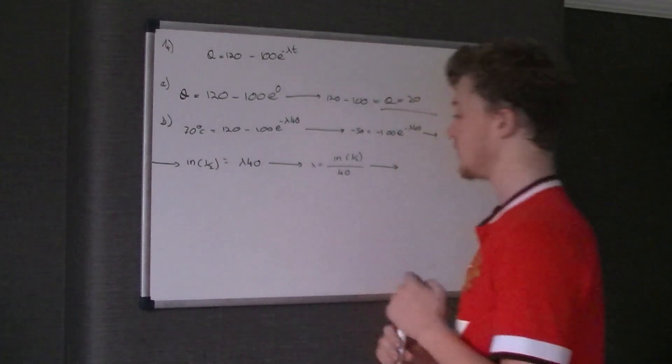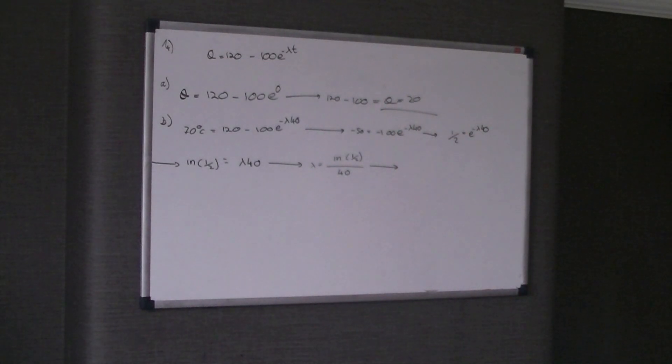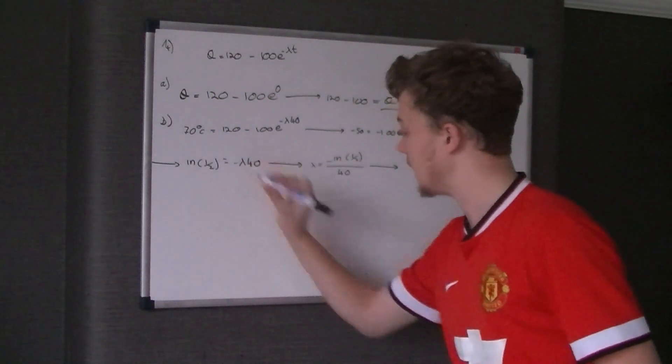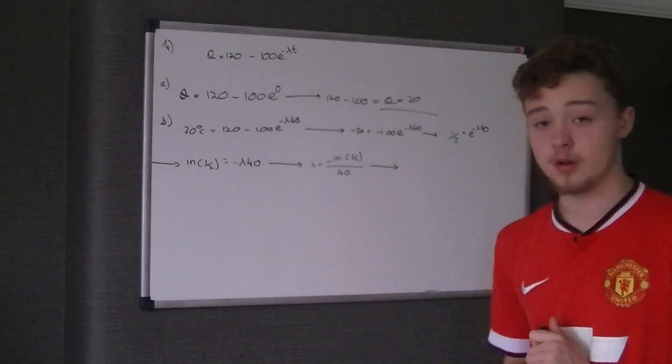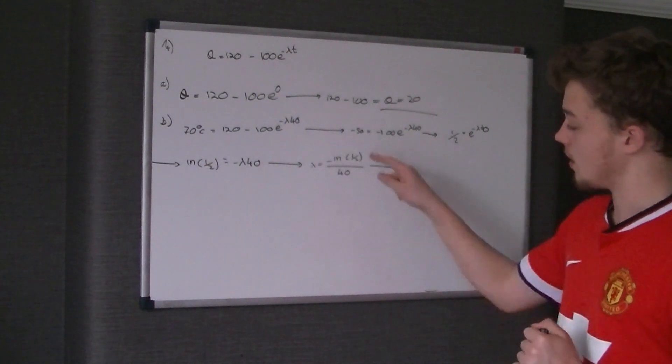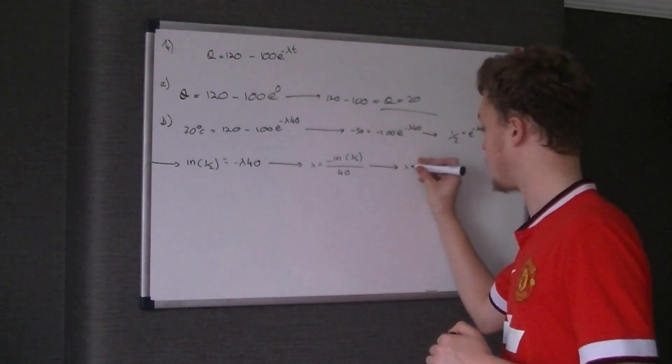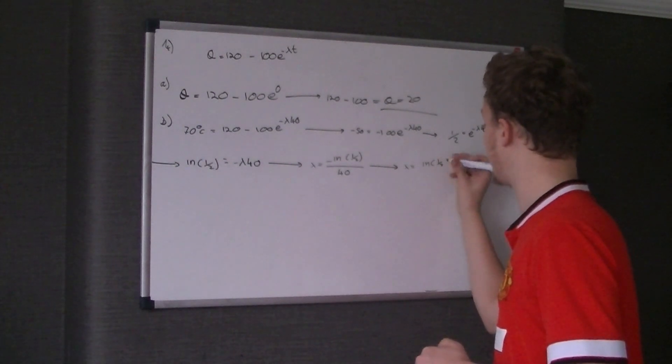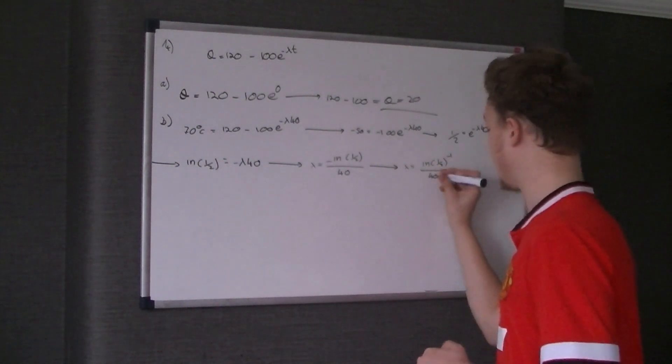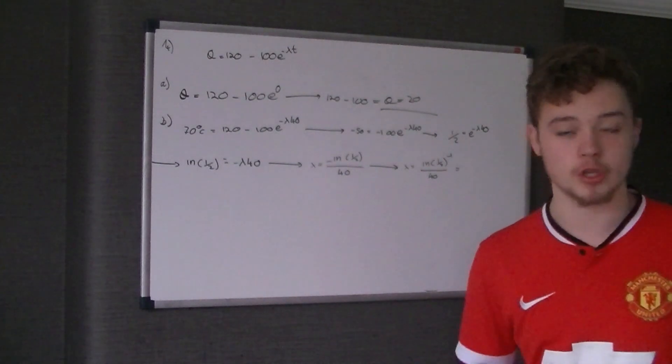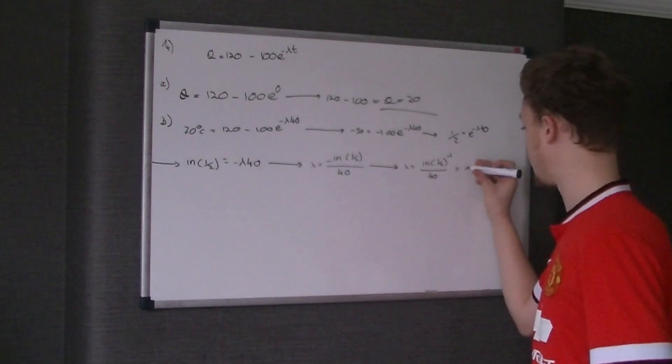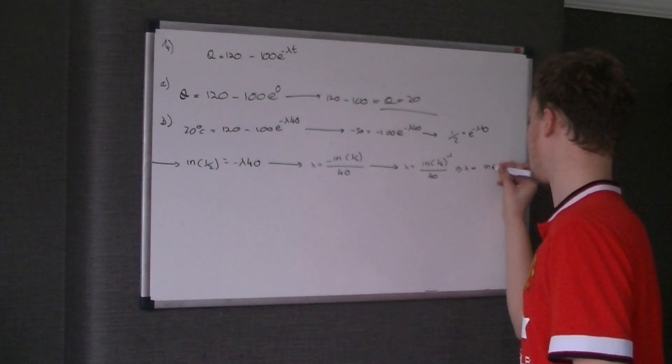So you can take it a little bit further than that. Because this negative power goes to the - we use log rule. So it becomes the ln of a half to the minus one over 40. Because it's minus one of the fraction, not the actual whole thing, you don't flip it. So therefore, lambda equals the ln two over 40. And that's the key bit.